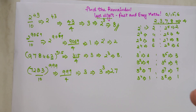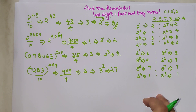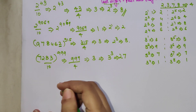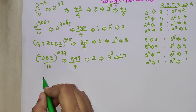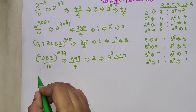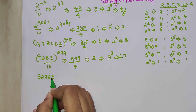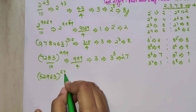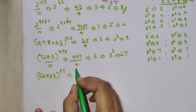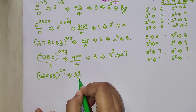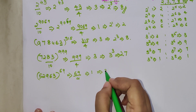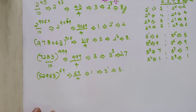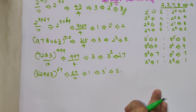Let's look at another example: 52963 raised to 69 — what's the last digit? Divide 69 by 4; the remainder is 1. So the answer is 3 raised to 1, which is just 3. That is the last digit.